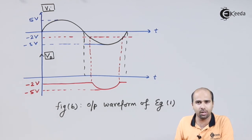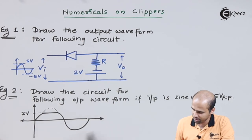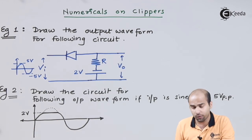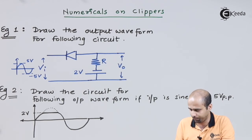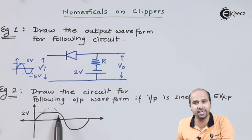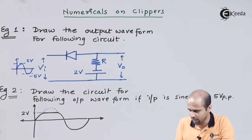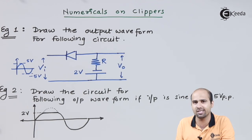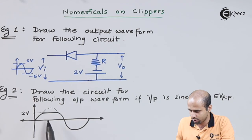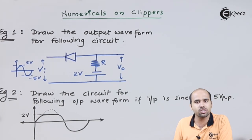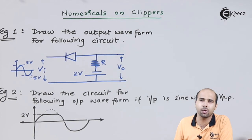Let us proceed for example number 2. Here a waveform is given and we have to identify the circuit that produces it and draw that circuit. First we should determine what type of clipping is used in this output waveform. The type of clipping is positive, so the circuit should be a positive clipper — whether series or parallel does not matter. We will identify it as a series positive clipper to keep the circuit simple.